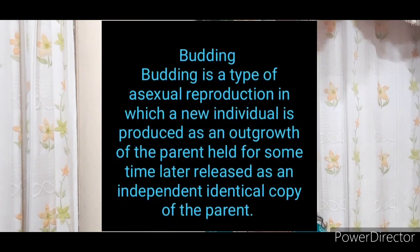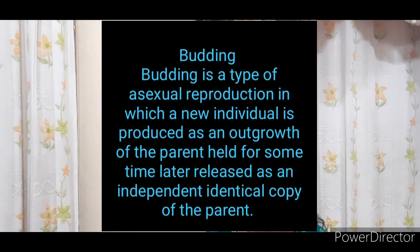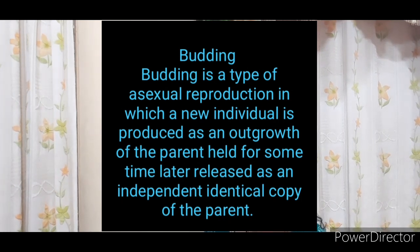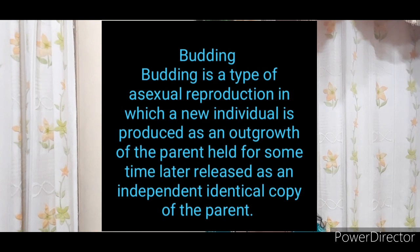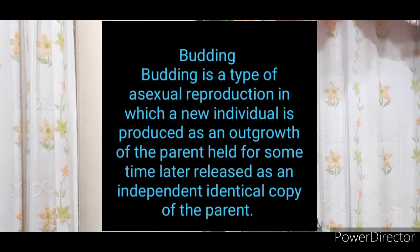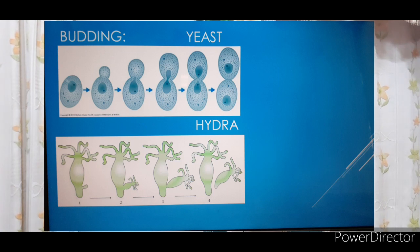Budding is a form of asexual reproduction in which a new individual is produced as an outgrowth of the parent and held for some time. Later it is detached from the parent cell, forming an identical copy and growing into a new organism. There are two types: unicellular budding, example yeast; and multicellular budding, example hydra.